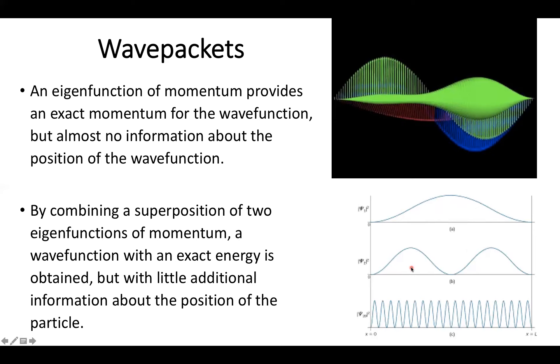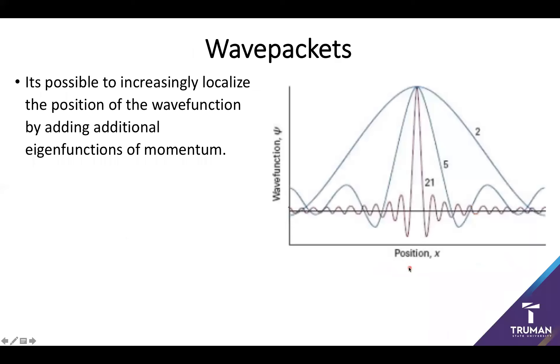Now it turns out it's actually possible to further constrain the position of a particle by adding in additional eigenfunctions of momentum. So if I start with say two wave functions I can go ahead and get a stationary particle. I add in five I get to, and I am very selective about the additions and cancellations of my amplitude, I can actually get the system to mostly centralize around a given point. You go up to 21 and it tends to be very centralized.